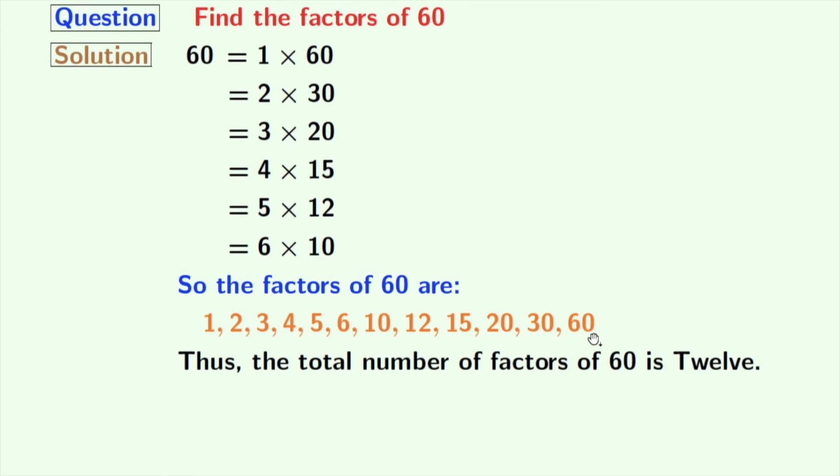Now look at these factors: 2, 3 and 5 among these factors are prime numbers, because these 3 numbers do not have any other divisor than 1 and that number itself. So we can say that the prime factors of 60 are 2, 3 and 5.